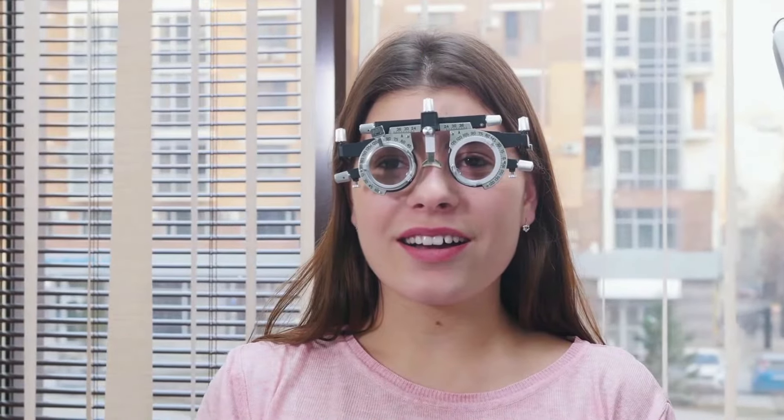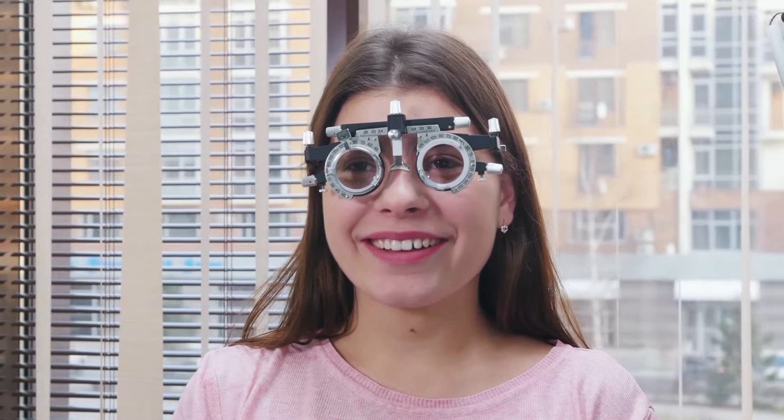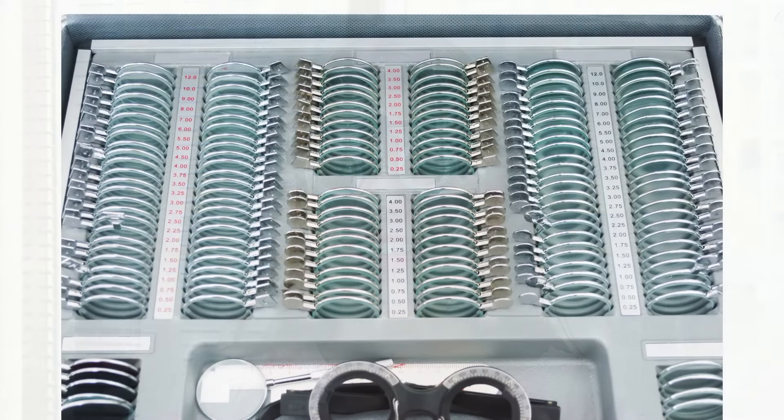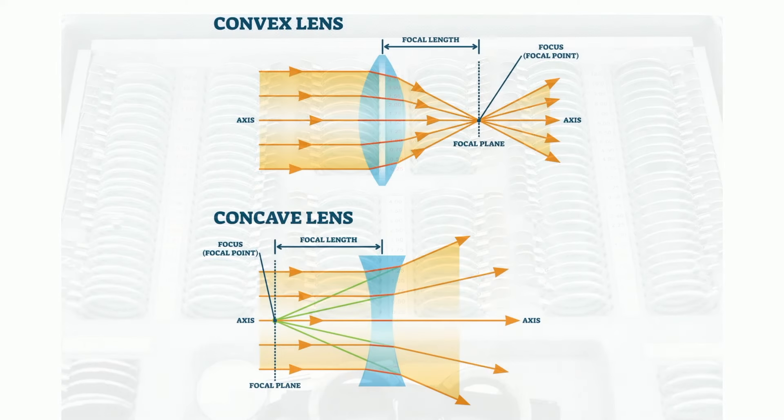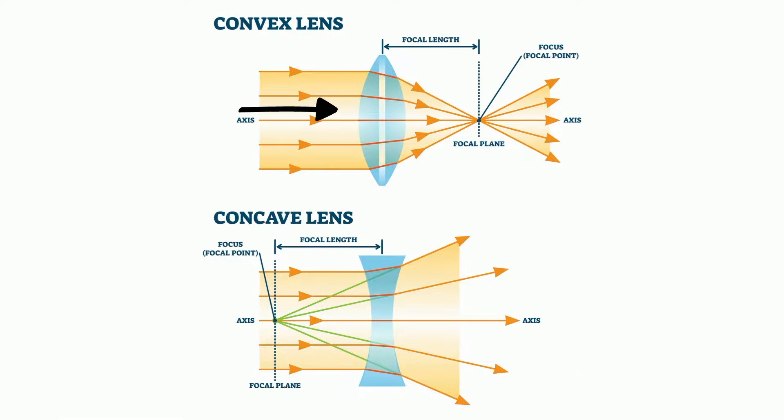You can go to an eye exam and they'll recommend certain lenses. Farsightedness can be fixed with a convex lens, and nearsightedness can be fixed with a concave lens. Let's find out why.